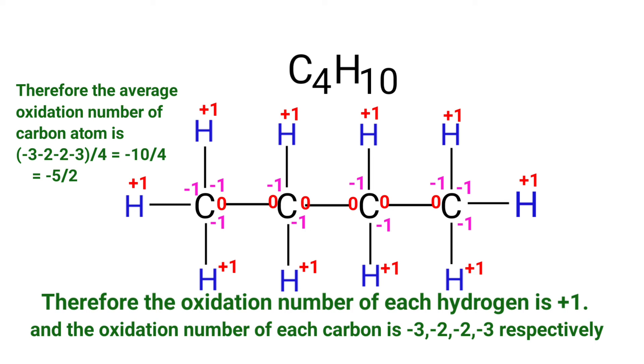Therefore, the average oxidation number of carbon atom is minus three, minus two, minus two, minus three, by four. That is equal to minus ten by four, that is equal to minus five by two.